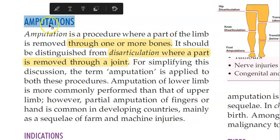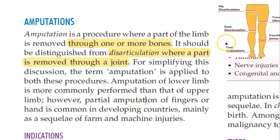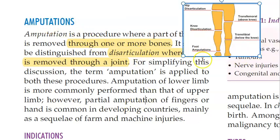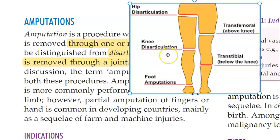In this video, let us understand amputation. Amputation means you are cutting through the bone — for example, cutting through the tibia is a below-knee amputation. If you are cutting above the knee, that is cutting through the femur, it will be called an above-knee amputation.